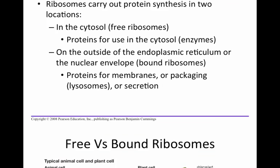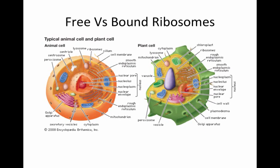So ribosomes are protein factories — they can either be free or bound. In an animal cell, you see free ribosomes located in the cytosol, and you also see bound ribosomes like a studded cell phone case on the rough ER. In a plant cell, you notice ribosomes that are free floating, and also those that are bound to the rough endoplasmic reticulum. We have both free and bound.